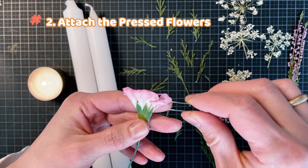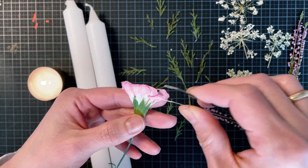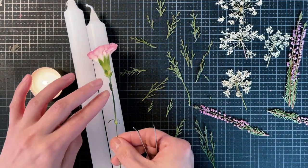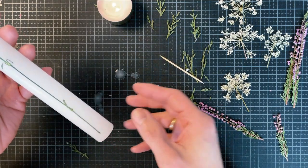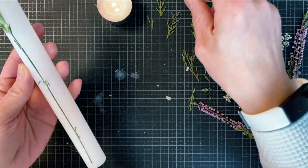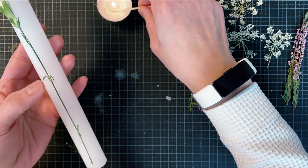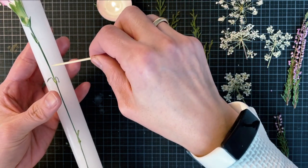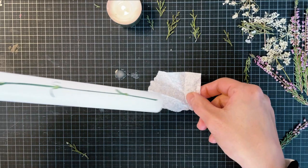Place the pressed flowers on the surface of the candle. Use candle wax as glue. Use a toothpick to apply candle wax. Attach the flowers on the candle.